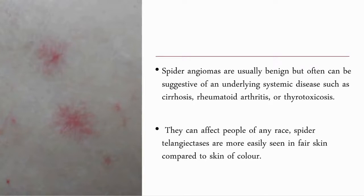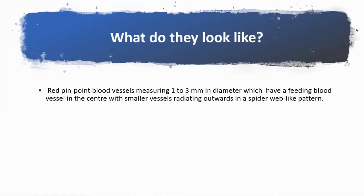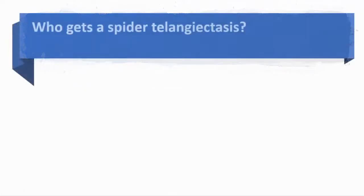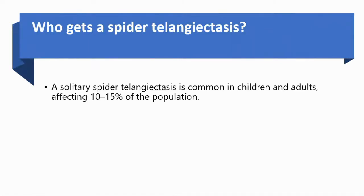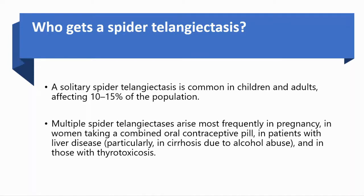They can affect people of any age, but they are more easily seen in fair skin compared to skin of color. They appear as red pinpoint blood vessels measuring one to three millimeters, with a feeding blood vessel in the center and smaller vessels radiating outwards in a spider web-like pattern. A solitary spider telangiectasis is seen in children and adults, affecting 10 to 15 percent of the whole population. Multiple spider telangiectases are seen in pregnancy, in women taking combined oral contraceptives, in patients with liver disease, and in those with thyrotoxicosis.